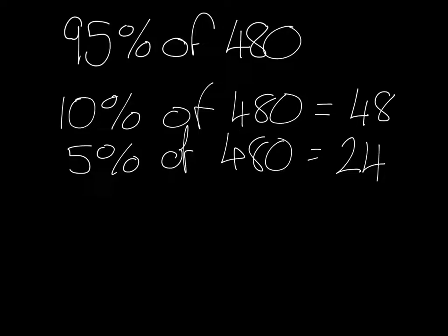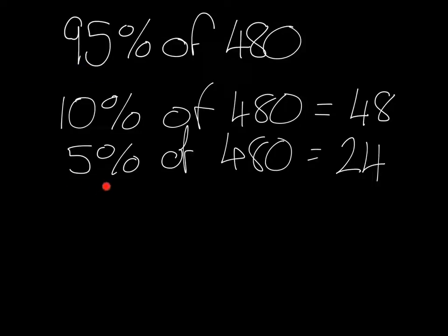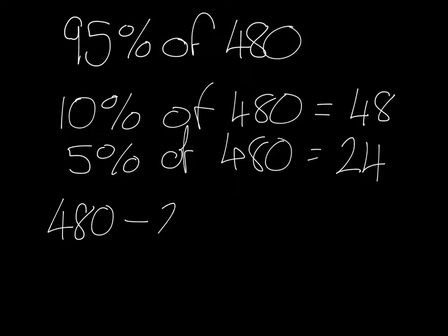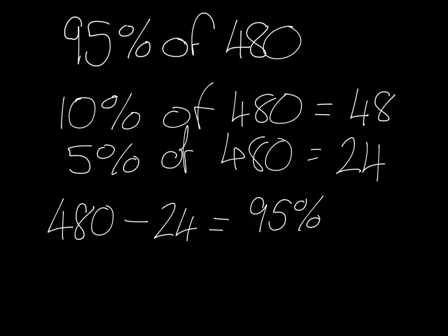And because I know that 5% is 24, and I want to find 95%, 95% is the same as 100% take away 5%. So I can say that 480 take away 24 will give me 95% of 480.